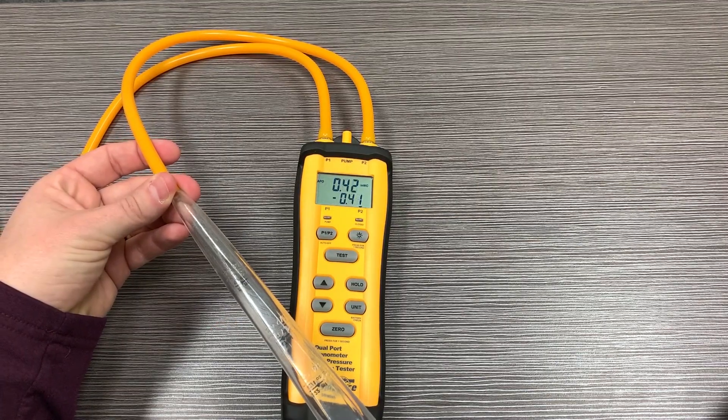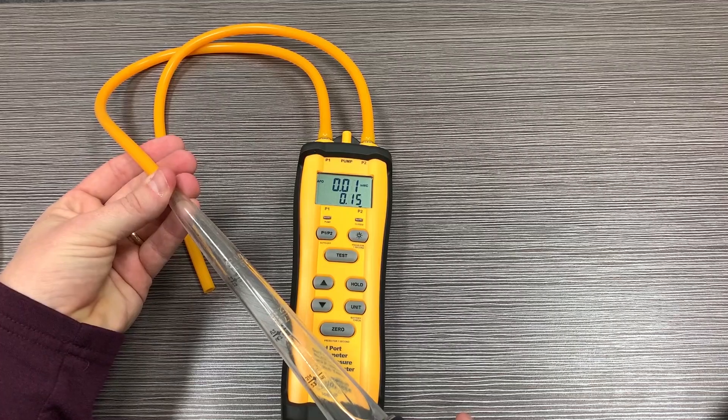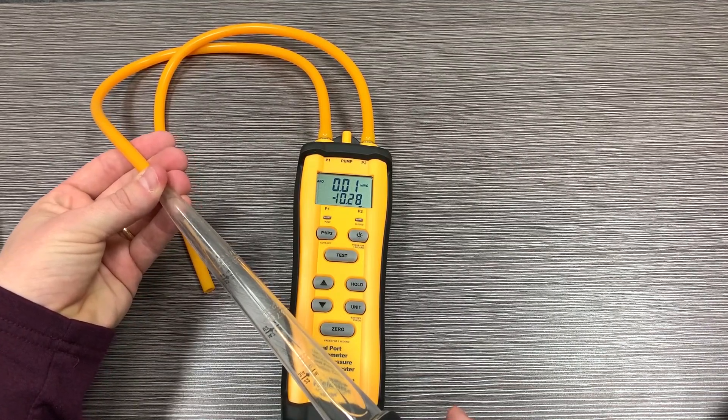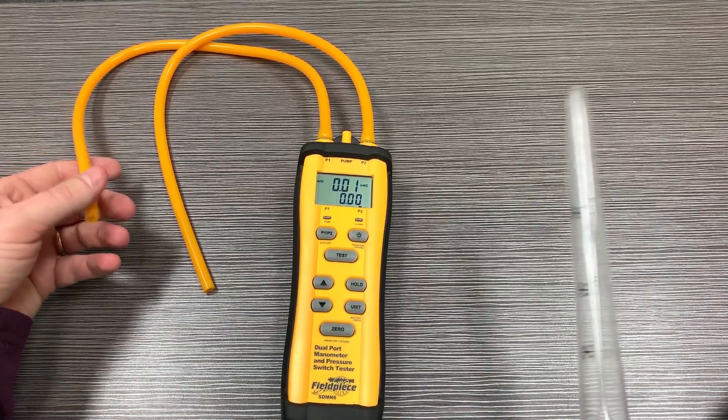If I change the pressure here, it's going to display the same on both for now. But if I change the pressure on P1, now because I'm only looking at P2, it's not going to change my P2 because this is only referenced to atmosphere, and of course that's zero.